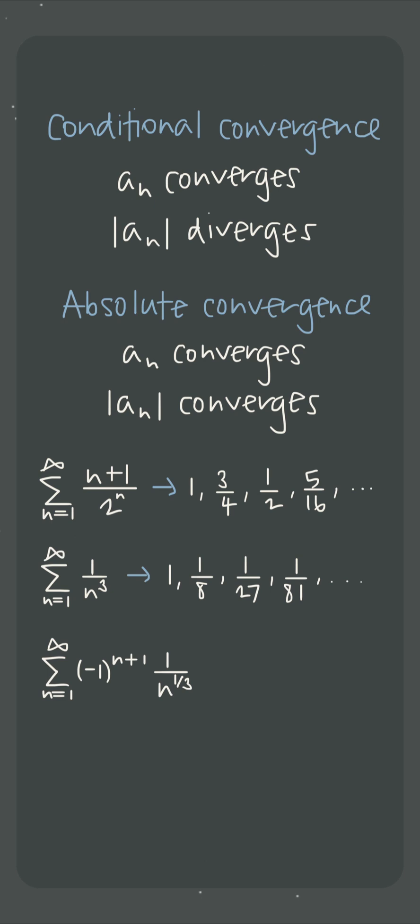But for this series, since it's an alternating series, its terms will alternate between positive and negative values, but the absolute value of the series will turn all those negative terms into positive terms, which means the two series aren't the same and we have to check the convergence of the absolute value series. This absolute value series happens to diverge, which means this series converges conditionally.